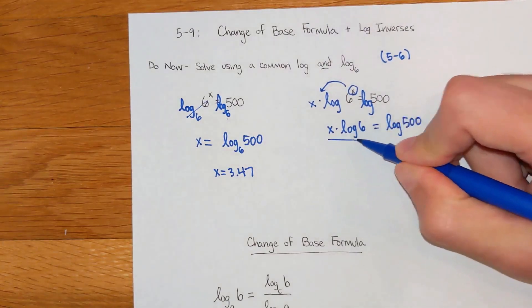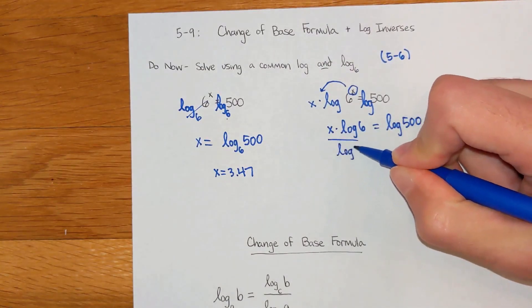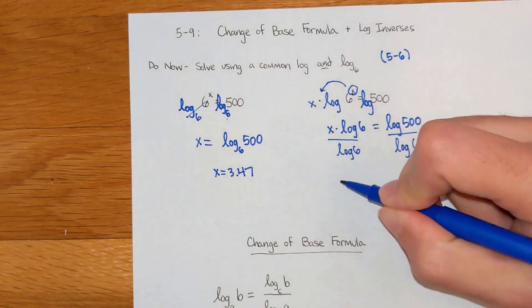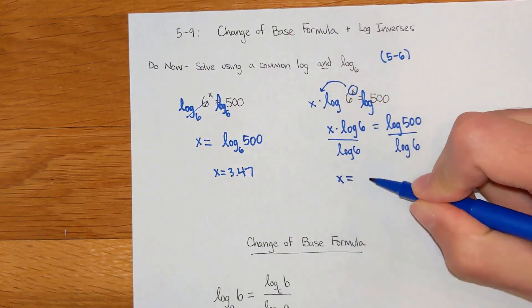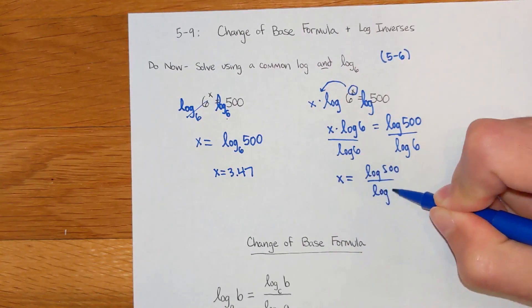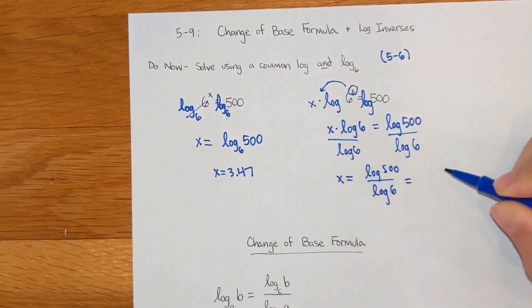And then if you solve this, you would end up dividing by log 6 to both sides. So you get x equals log of 500 divided by log of 6, which if you type that in the calculator or Google or whatever, you should get that exact same answer.